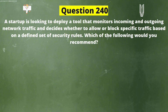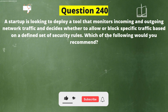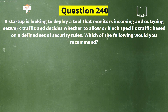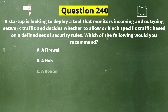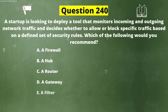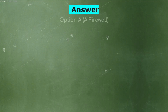Next question: A startup is looking to deploy a tool that monitors incoming and outgoing network traffic and decides whether to allow or block specific traffic based on a defined set of security rules. Which of the following would you recommend? Options: A) A firewall, B) A hub, C) A router, D) A gateway, E) A filter, F) A resource group. The correct answer is option A, a firewall.